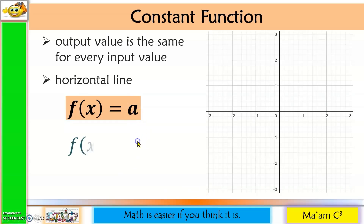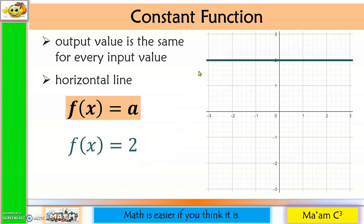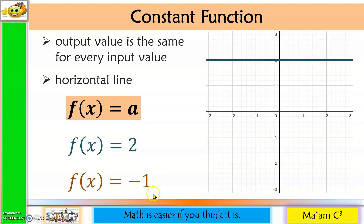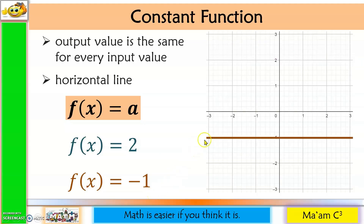For example, f(x) = 2 produces a graph where, even though you have different values of x, your y remains the same — that is why it is called constant. Another example: f(x) = -1, so the graph is y = -1.